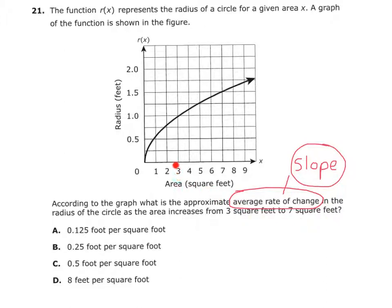So they want me to tell what the average slope is from 3 to 7, right? From 3 to what?